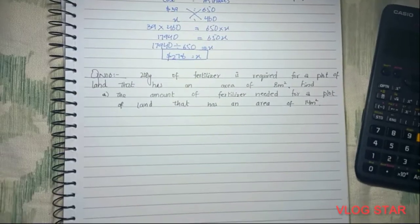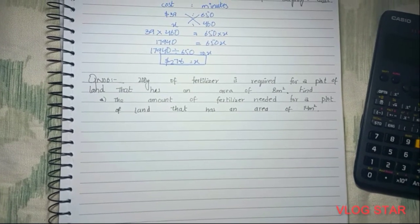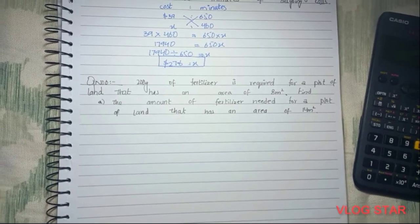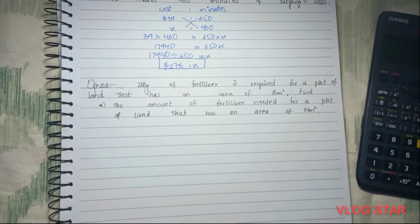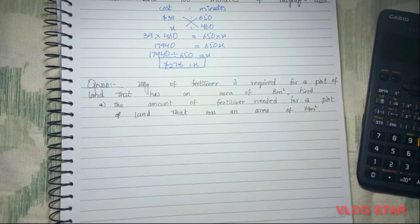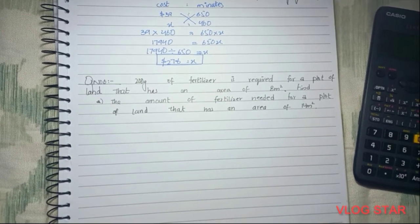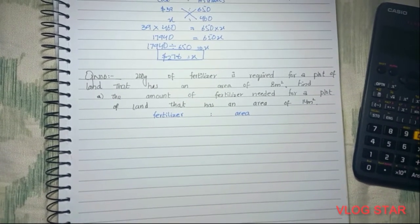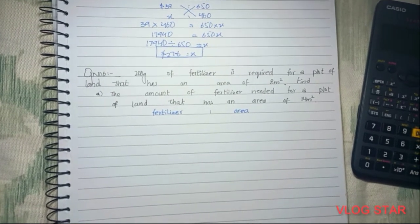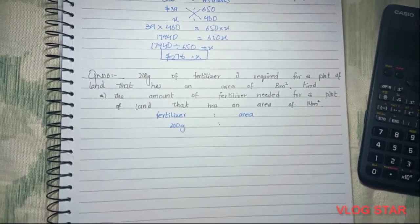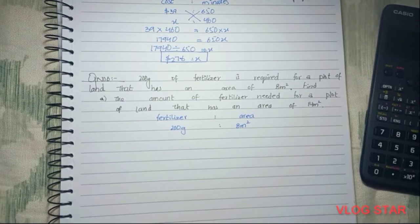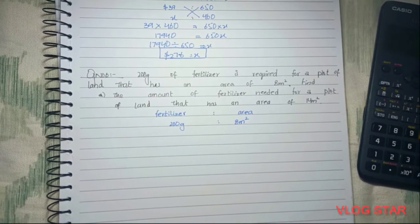Moving on to question number six: 200 grams of fertilizer is required for a plot of land with an area of 8 meters squared. Part a: find the amount of fertilizer needed for a plot of land with an area of 14 meters squared. We use the ratio: fertilizer to area. According to the question, fertilizer equals 200 grams and area equals 8 meters squared.